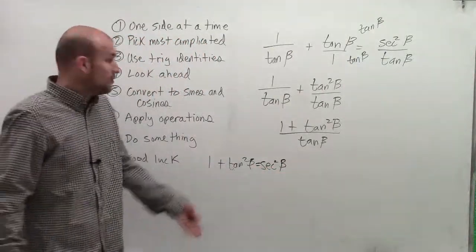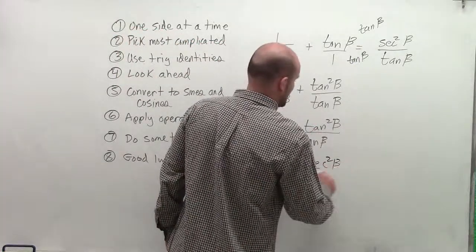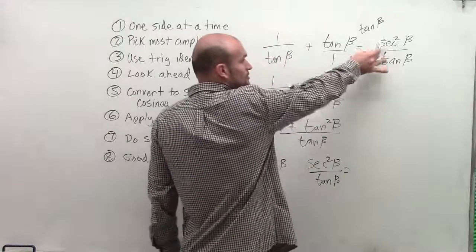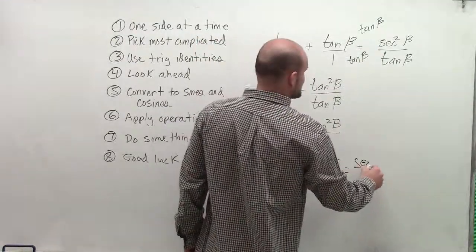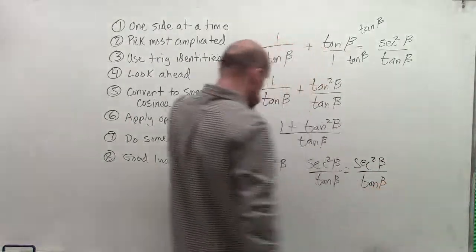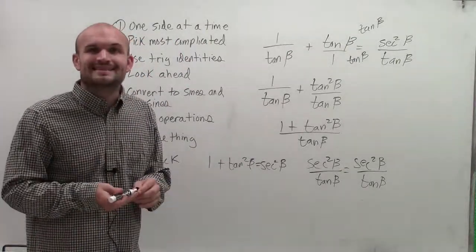Well, that's very important because now I can rewrite this as secant squared of beta over tangent of beta, which is equal to the right side of my equation, which is secant squared of beta divided by tangent of beta. So there you go, ladies and gentlemen. That's how you verify trigonometric identities. Thanks.